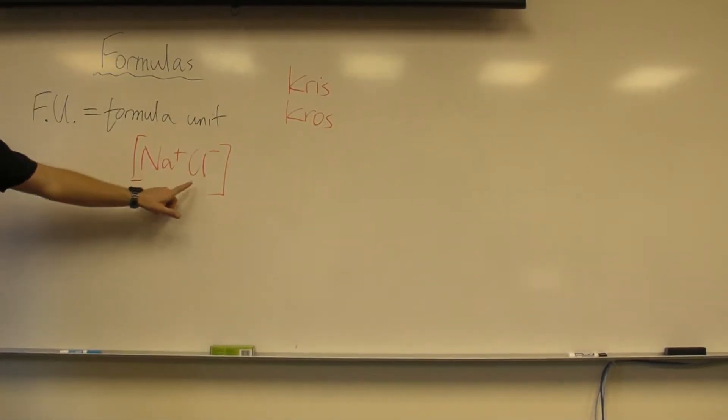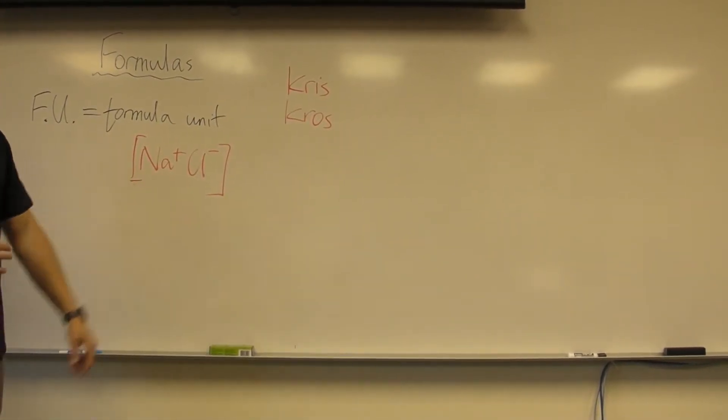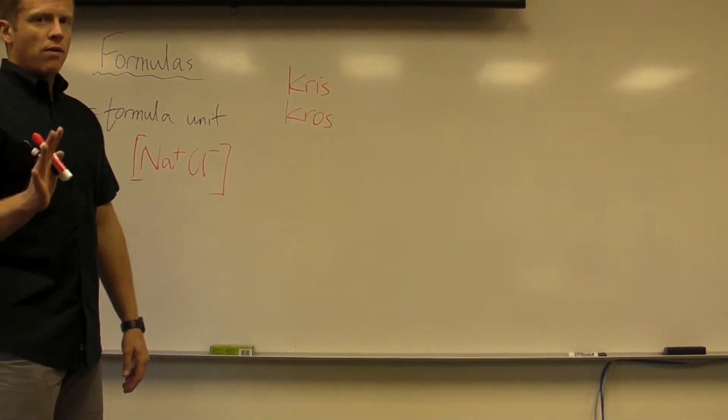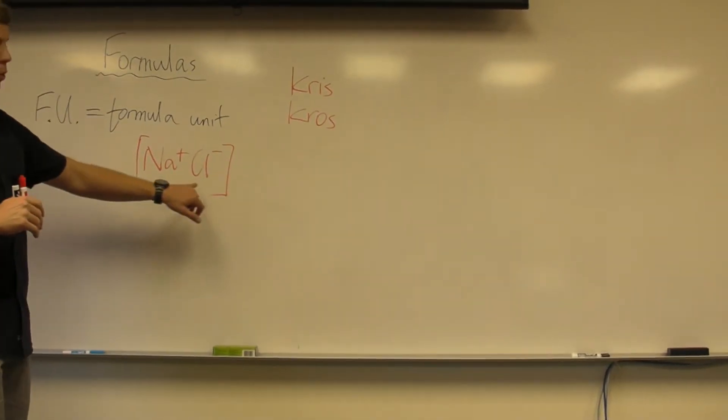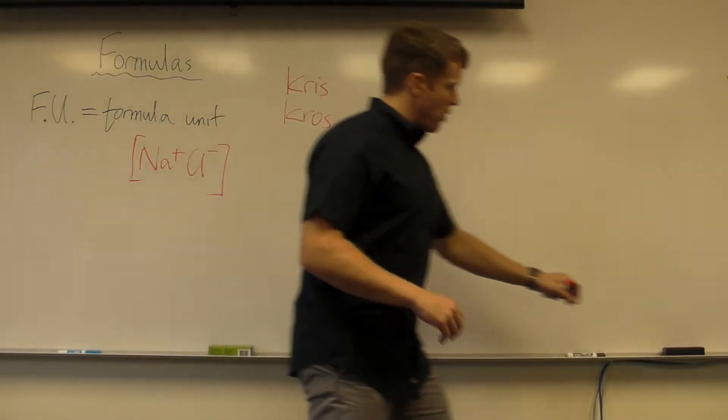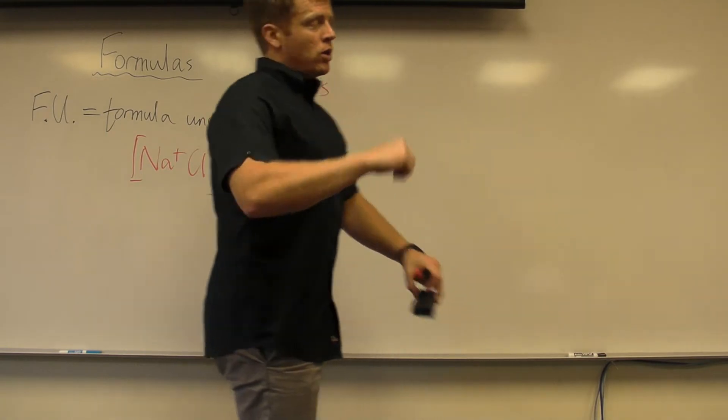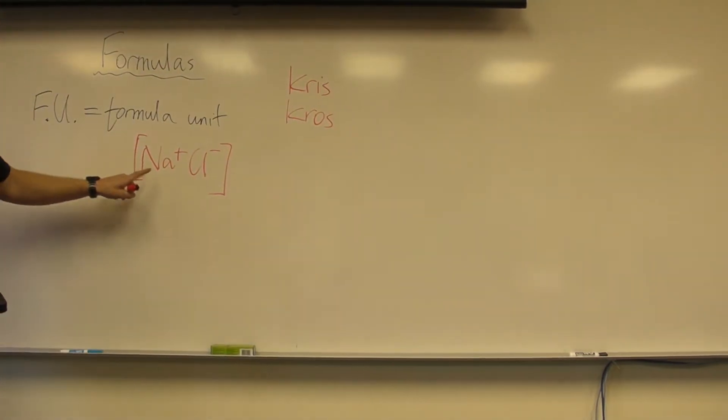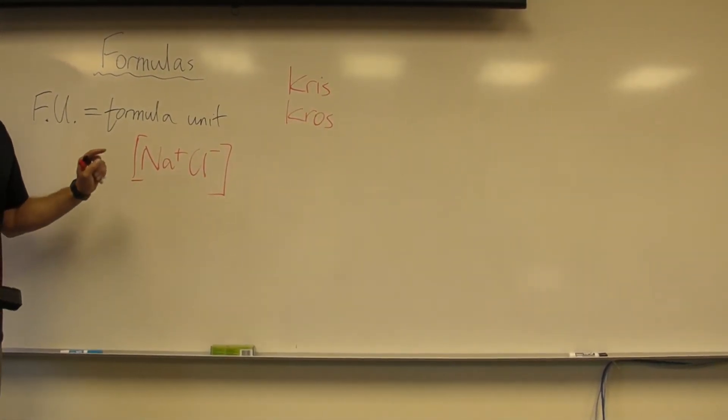So not all of them are one-to-one, or a ratio of one-to-one. Some of them are quite, there's quite more actually that aren't one-to-one than actually are one-to-one. And I'll show you some examples. But for now though, formula unit Fu means smallest ratio of ions in that substance.